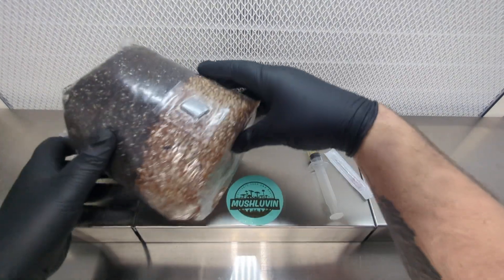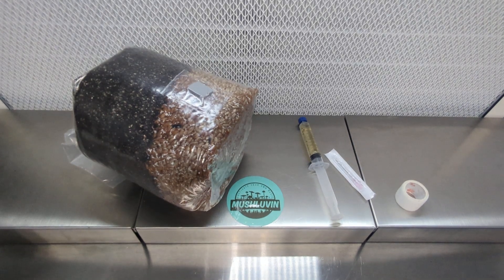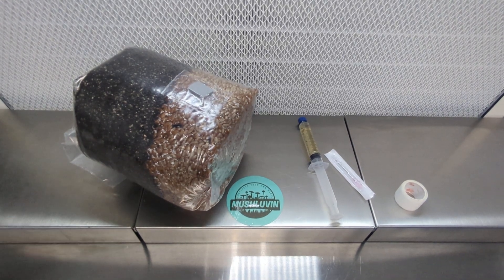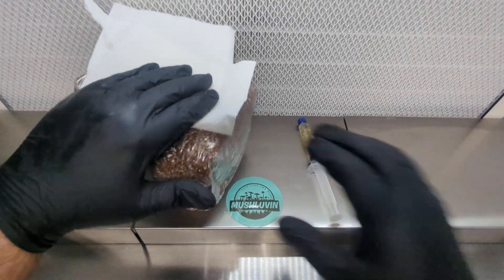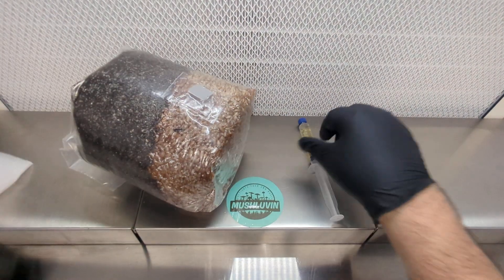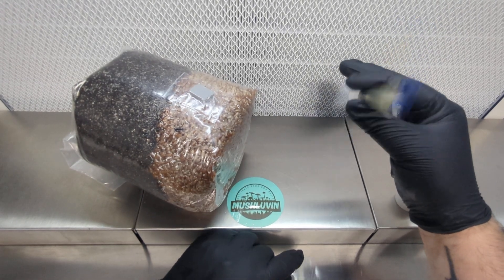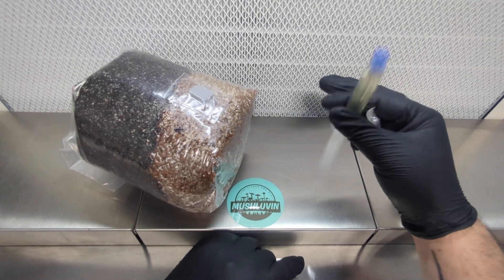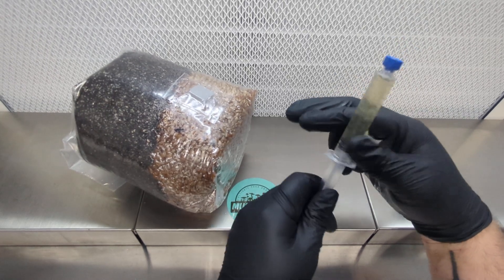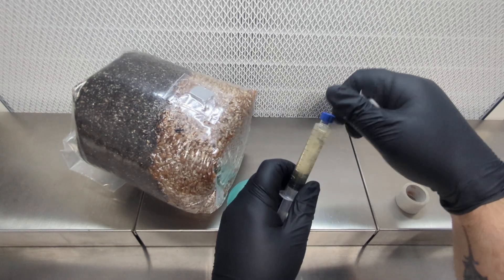So we're going to go ahead and jump in. I'm going to do one quick spritz on my hands just to make sure there's nothing sitting on them that could cause contamination. I'm going to give one more spray on the injection port. You want to make sure that you shake up the syringe really well. Mycelium will clump up if it's left at room temperature which could make it hard to get out of the syringe. So just mix it up and let's go ahead and do it.